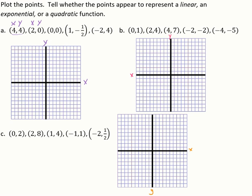So we'll graph the points: (4, 4), (2, 0), (0, 0), (1, negative 1/2), and (negative 2, 4). If we look at these plotted points, it resembles the U-shape of our quadratic. So we're going to say that this is a quadratic function.